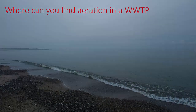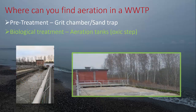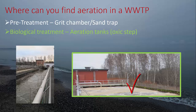A short introduction to where you can find aeration in a wastewater treatment plant, or WWTP. First of all, you can find it in the pretreatment grid chamber and sand trap. On the picture here you see a grid chamber with the main airline and the drop legs going down to the aeration system. But today we're going to focus on biological treatment and the aeration tanks. On the picture you see a typical aeration basin with a big main pipe going down to the aerators, with the pattern of aeration visible on the surface.